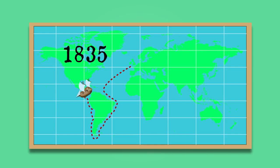In 1835, the Beagle arrived at the Galapagos Islands near Ecuador. What Darwin found there surprised him greatly.